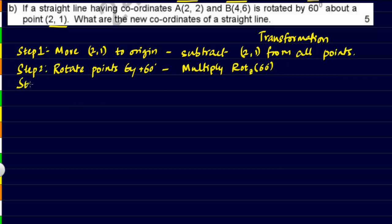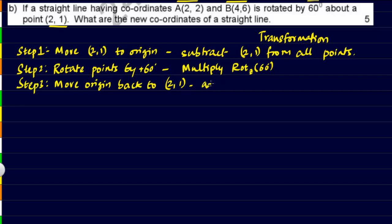Step 3 is to move the origin back to (2, 1). Here we have to do the reverse of what we did in step 1, so we'll have to add (2, 1) to all points.